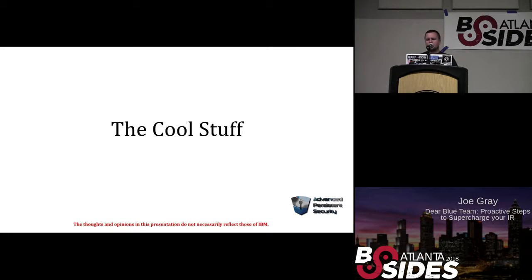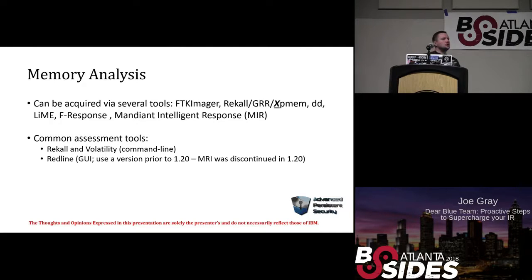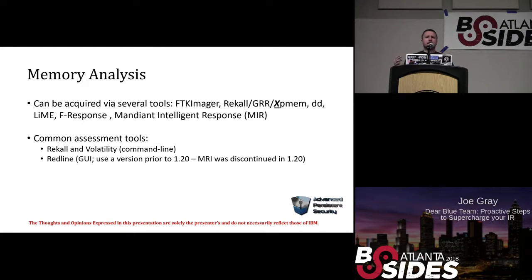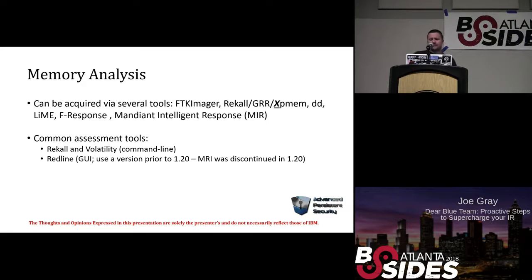Now that we're out of the standard forensics talk, let's talk about some cool stuff — like memory analysis. There are several tools you can use to acquire this: FTK Imager is one. If you use Google Rapid Response or Recall, which is a fork of Volatility, you can do it that way. F-Response, and then Mandiant has the Intelligent Response Mirror. In terms of assessing, Volatility and Recall from the command line. You've also got Redline, a product from Mandiant/FireEye — but there's a tricky piece: you want to use a version before 1.20. They did away with the malware risk index in version 1.20 to make it load faster, but that's one of the most useful things in my opinion. I'm using version 1.14.